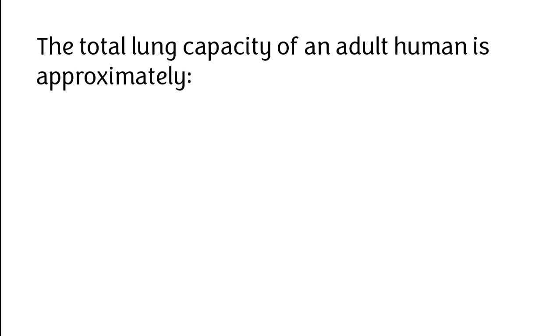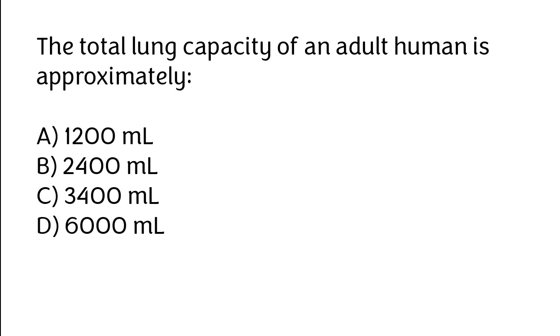The total lung capacity of an adult human is approximately: (A) 1200 ml, (B) 2400 ml, (C) 3400 ml, (D) 6000 ml.